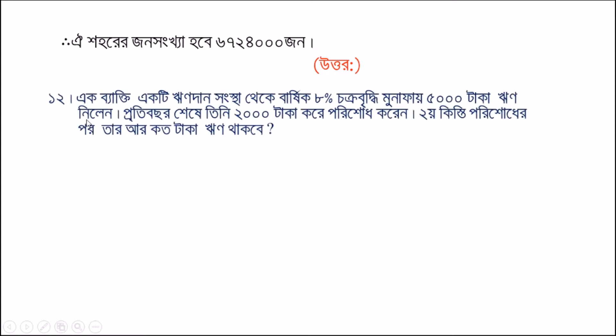Next question: 1, 2, 1 — with a rate of 12.8% compound interest (chakraviddi), principal 5000 taka and 20000 taka. Find the amount of money after the given period.